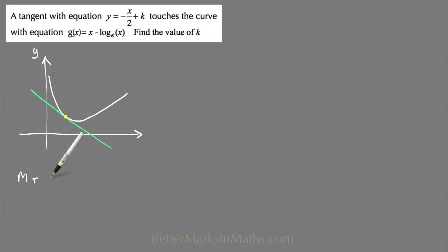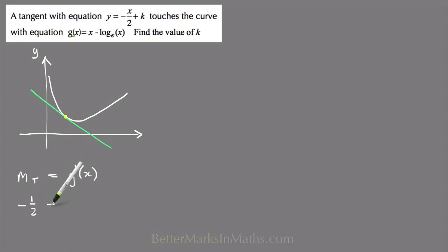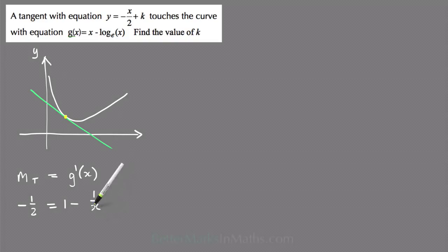The next step is to let the gradient of the tangent equal the gradient of the curve, g dash of x. The gradient of the tangent is minus one half. Setting that equal to the derivative of g of x: differentiating gives 1 minus 1 over x, since the derivative of log e of x is 1 over x.